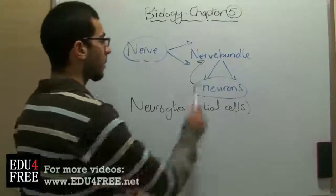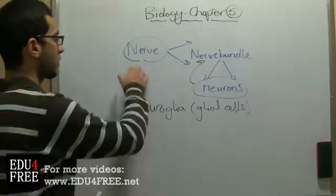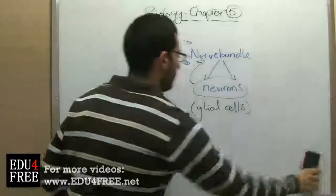So this forms a nerve bundle. And a group of nerve bundles form a nerve.